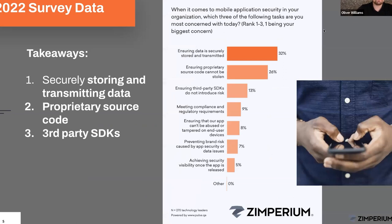Looking at what areas technology leaders are most concerned about: the leading concern right now is data storage and transmission — is data being received securely, sent securely, generated securely? Going down the chain, concerns include intellectual property and supply chain attacks — very much common themes driving the real-world attacks we've been seeing. One of the biggest emerging trends we expect to see next, especially around supply chain, involves repositories being compromised.